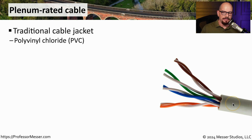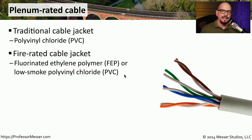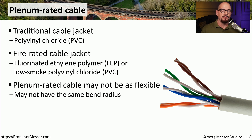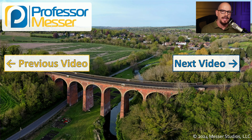Ethernet cables have a jacket on the outside, and many are manufactured with polyvinyl chloride, or PVC. If you're putting cable into a plenum, you need a plenum-rated cable, which is usually manufactured with a fluorinated ethylene polymer (FEP) or a low-smoke polyvinyl chloride. Plenum-rated cable is designed to be much safer in a fire than non-plenum-rated cable. One challenge is that plenum-rated cable may not be quite as flexible, making it more difficult to install around twists and turns. So if you're installing cable in a new or existing building, make sure you see where that cable is being run and use the correct type for that location.